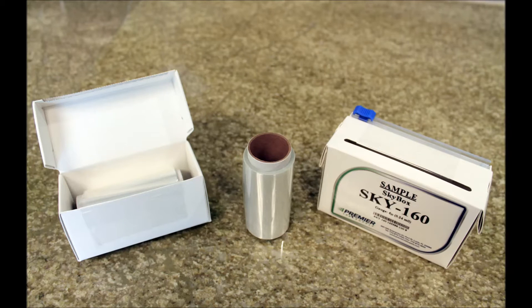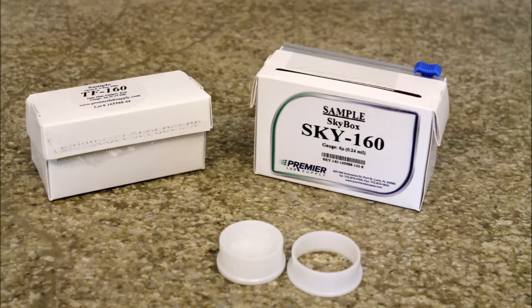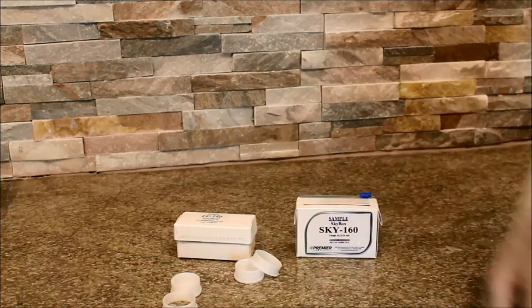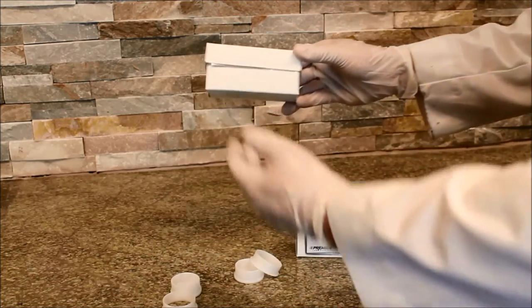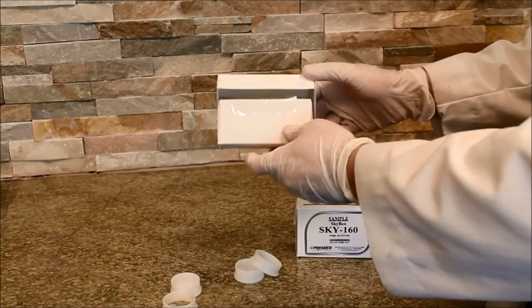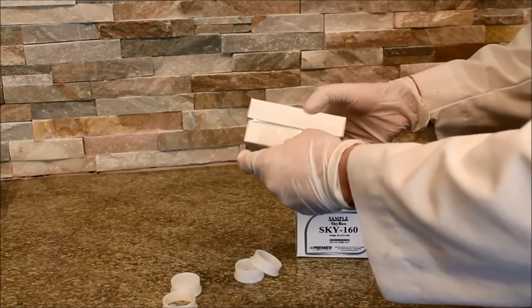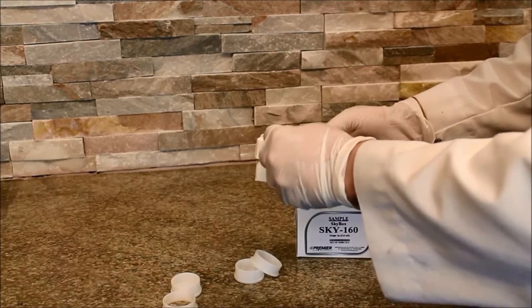Film box rolls are a popular choice in sample preparation for XRF analysis of liquid samples. Traditional film boxes rely on a serrated edge to cut the film, resulting in jagged film edges and potential leakage from the sample cup.